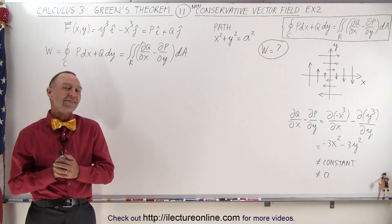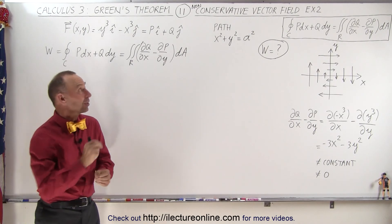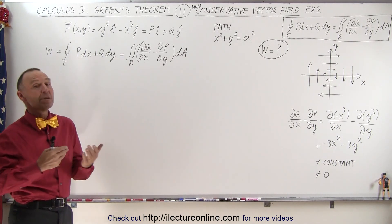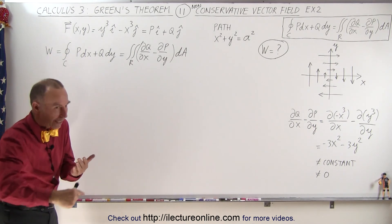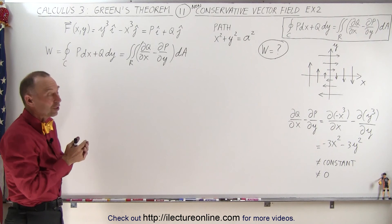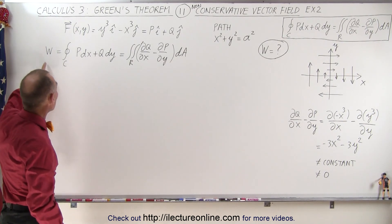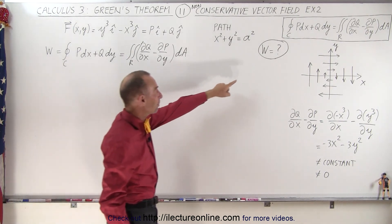Welcome to Electron Line. Now let's take a look at another non-conservative vector field, which means that if we do a line integral along a closed path, we should get a non-zero answer, which means there'll be work done. Work done will not be zero.